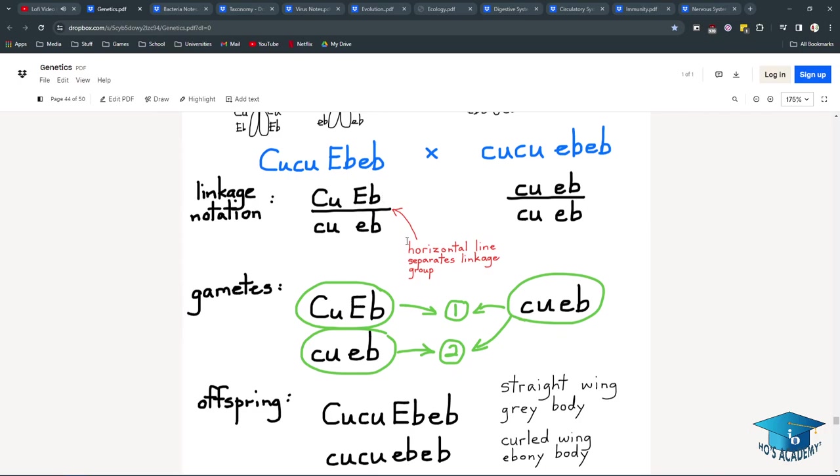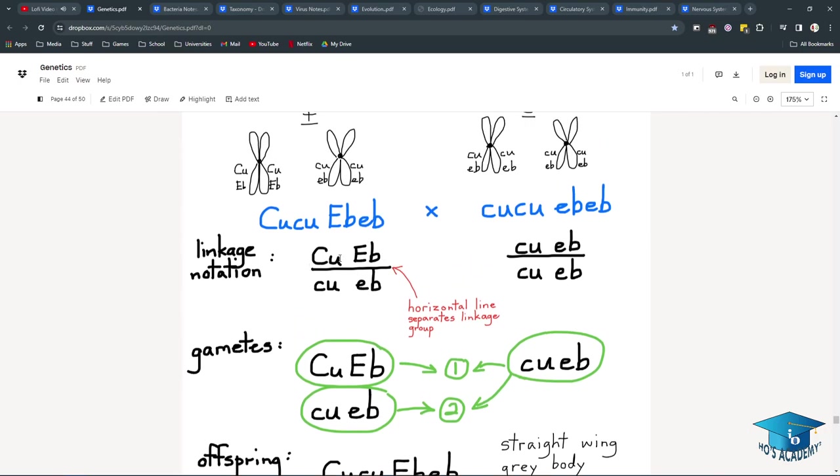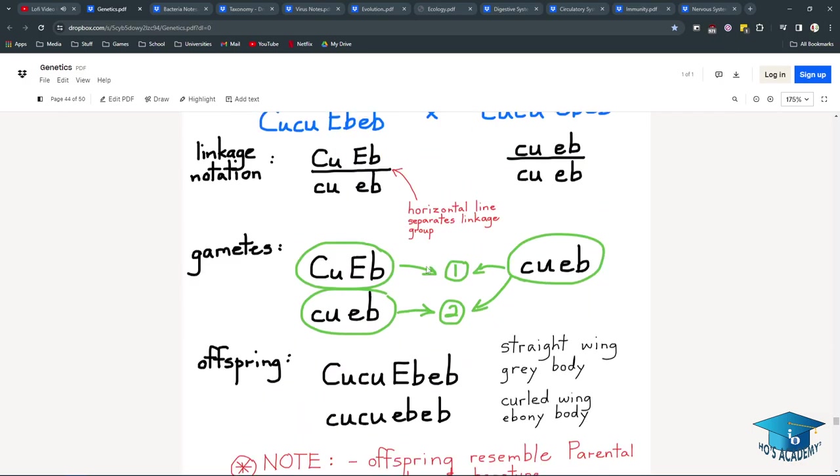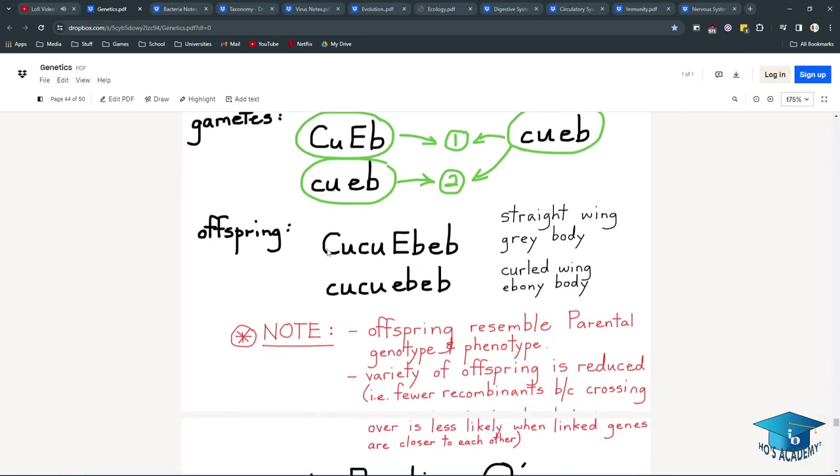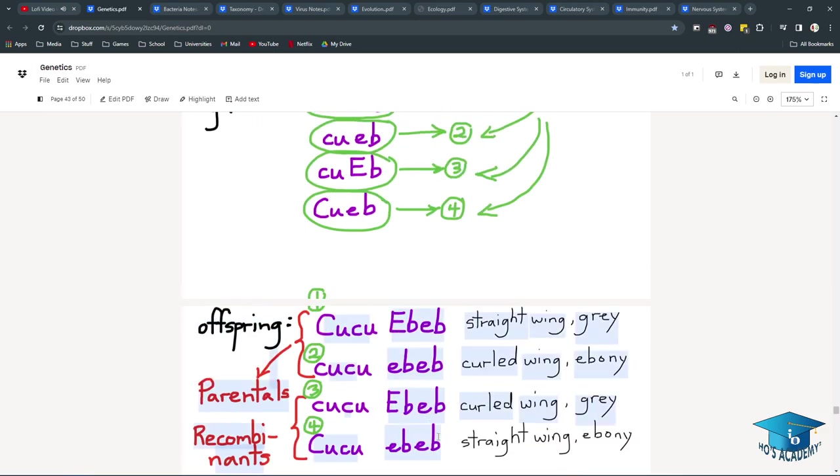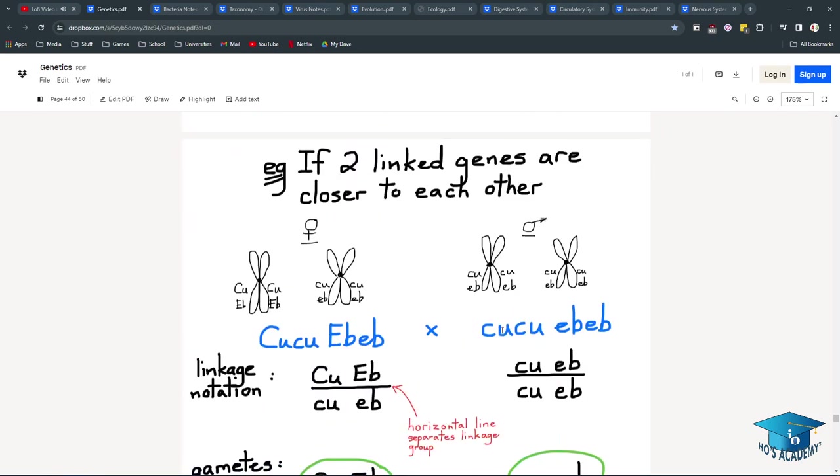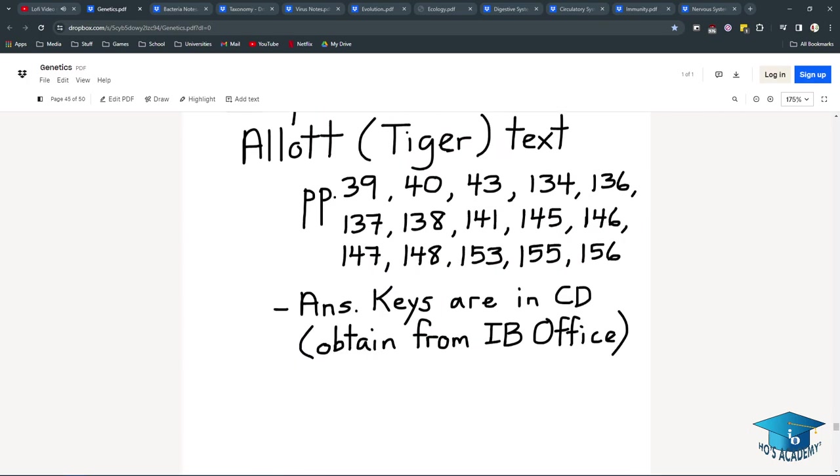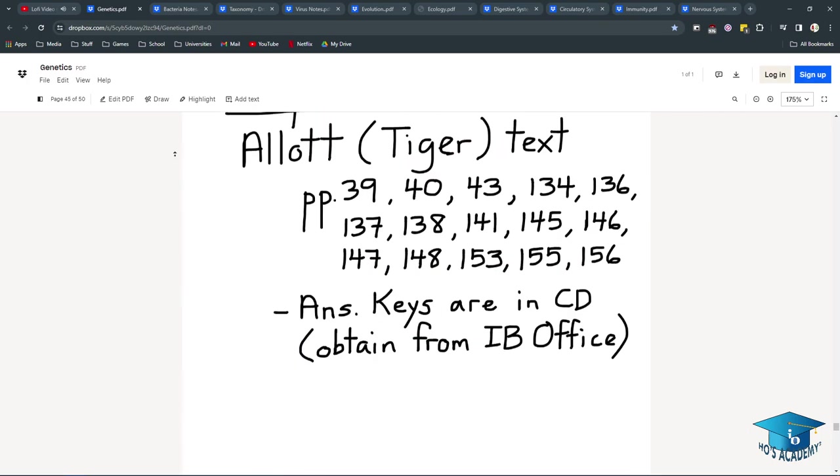This is the linkage notation. This is how you indicate that Cu and capital EB, Cu, eb, are linked. And the gametes will be moved together as so. So the offspring will actually, in reality, only be these two combinations. Whereas these four recombinants, the other two are much less likely. Yep. And that's it for genetics. Thank God.